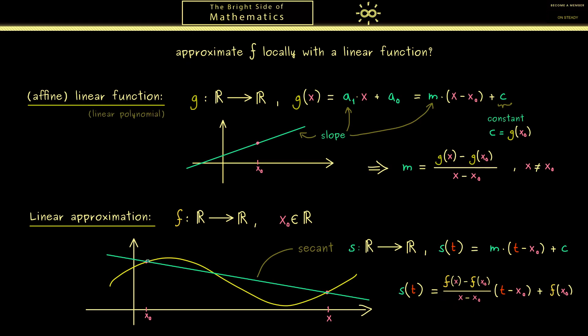As a reminder this is exactly what you can visualize here in the graph with a triangle. Then this length here with a sign is the numerator which means f(x) minus f(x0). And the other side is just the denominator. Indeed that is how you usually calculate slopes.